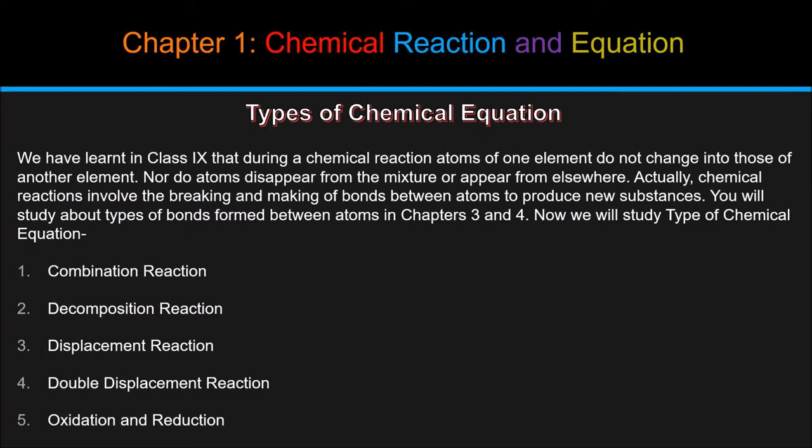Now we will study type of chemical equation. There are 6 types of chemical equations. First one is combination reaction, second one is decomposition reaction, third one is displacement reaction, fourth one is double displacement reaction, and fifth one is oxidation and reduction. Let us understand these in details.